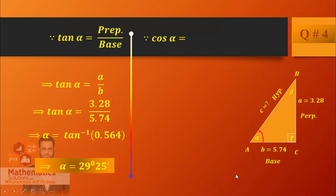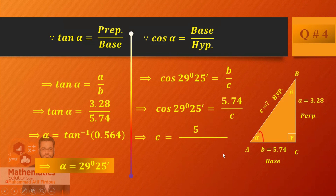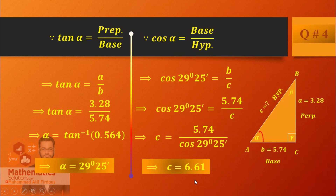Now find side C. Use cosine alpha which equals base over hypotenuse. Base is B and hypotenuse is C. B equals 5.74 and alpha is 29 degrees 25 minutes. So C equals 5.74 divided by cos(29°25'). Cross multiply and simplify — C equals 6.61.